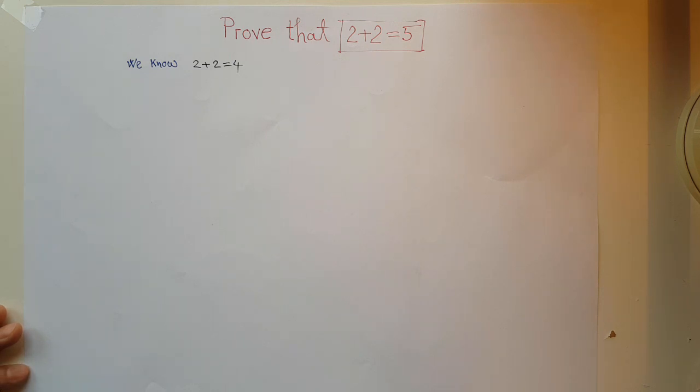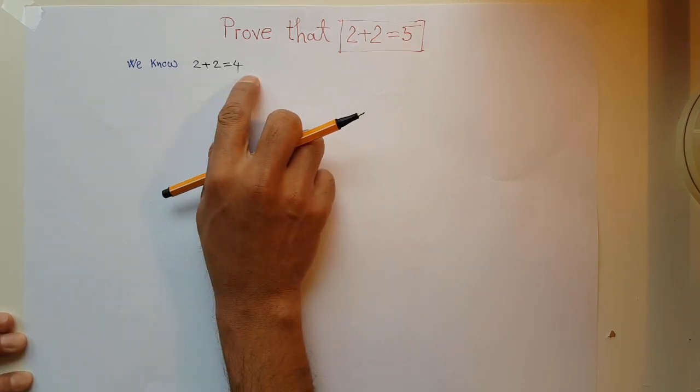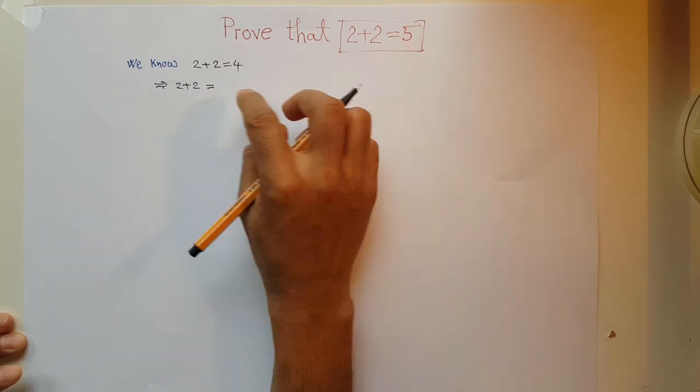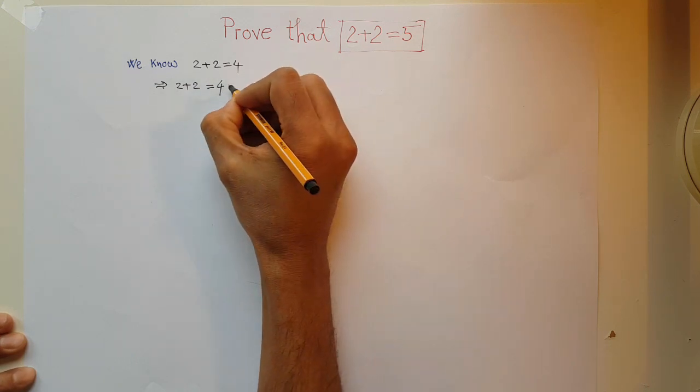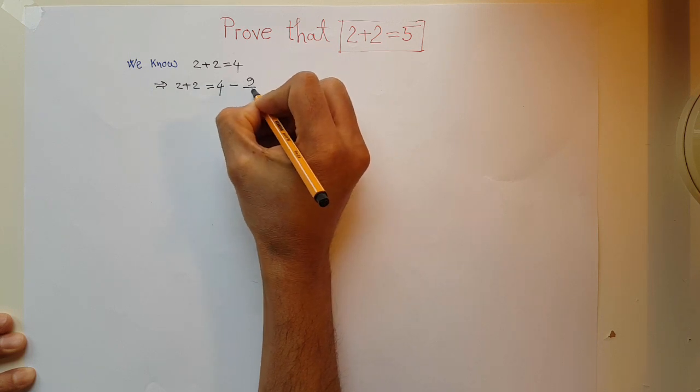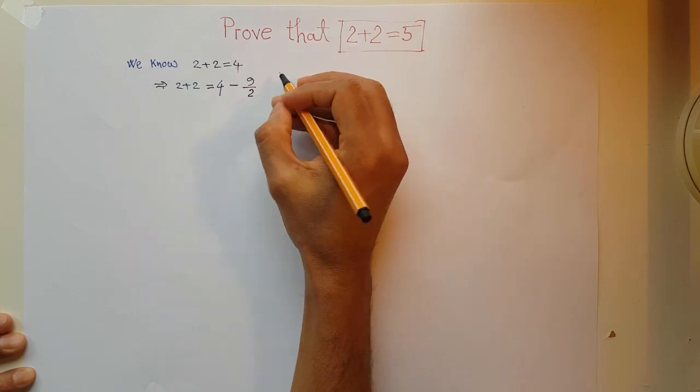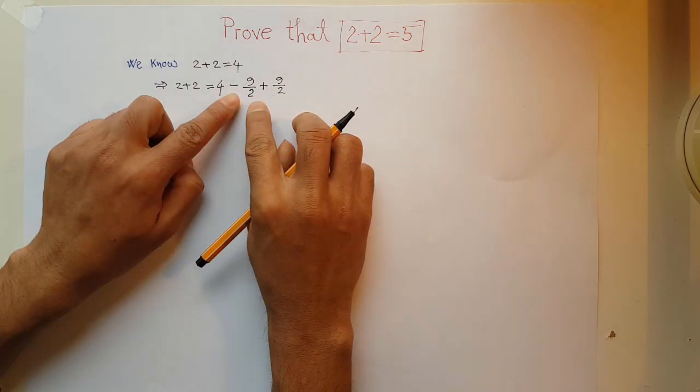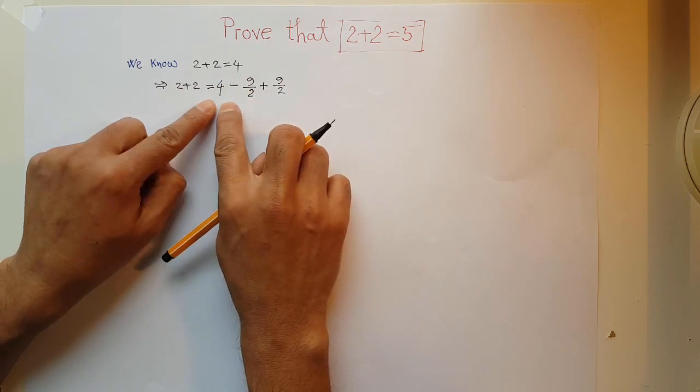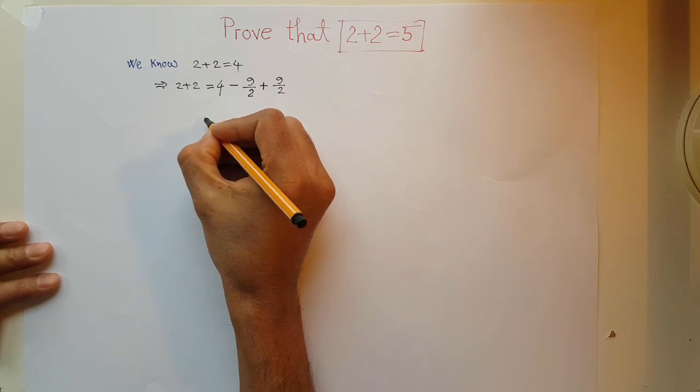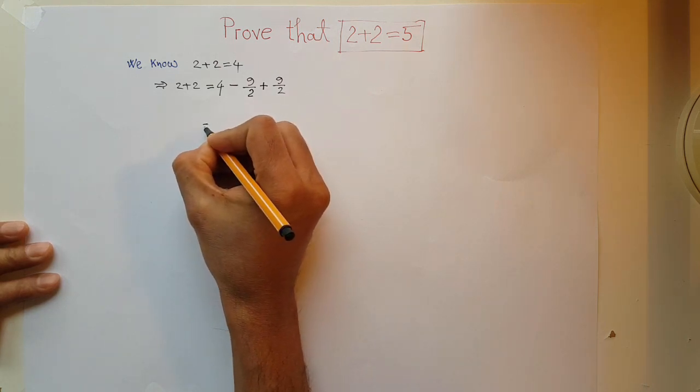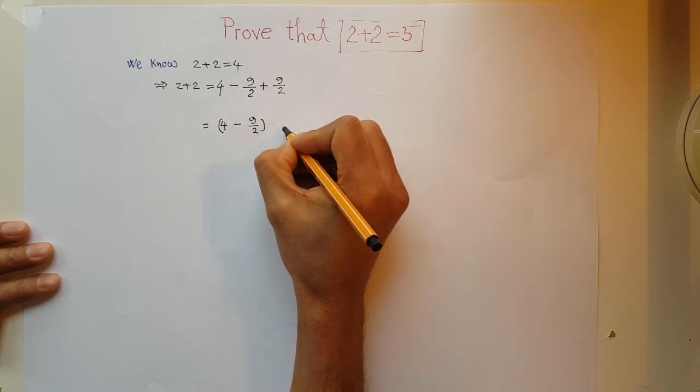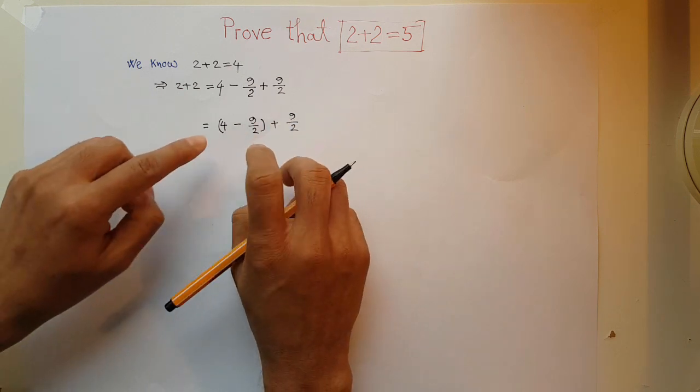This video has an educational value that I will tell you at the end of this video. Let's start from this equation. Left hand side is 2 plus 2 and right hand side is 4. So I can write 4 and include another term that is minus 9 over 2. And to make it balance with the previous line, I have to add the similar value with plus sign, that is plus 9 over 2.